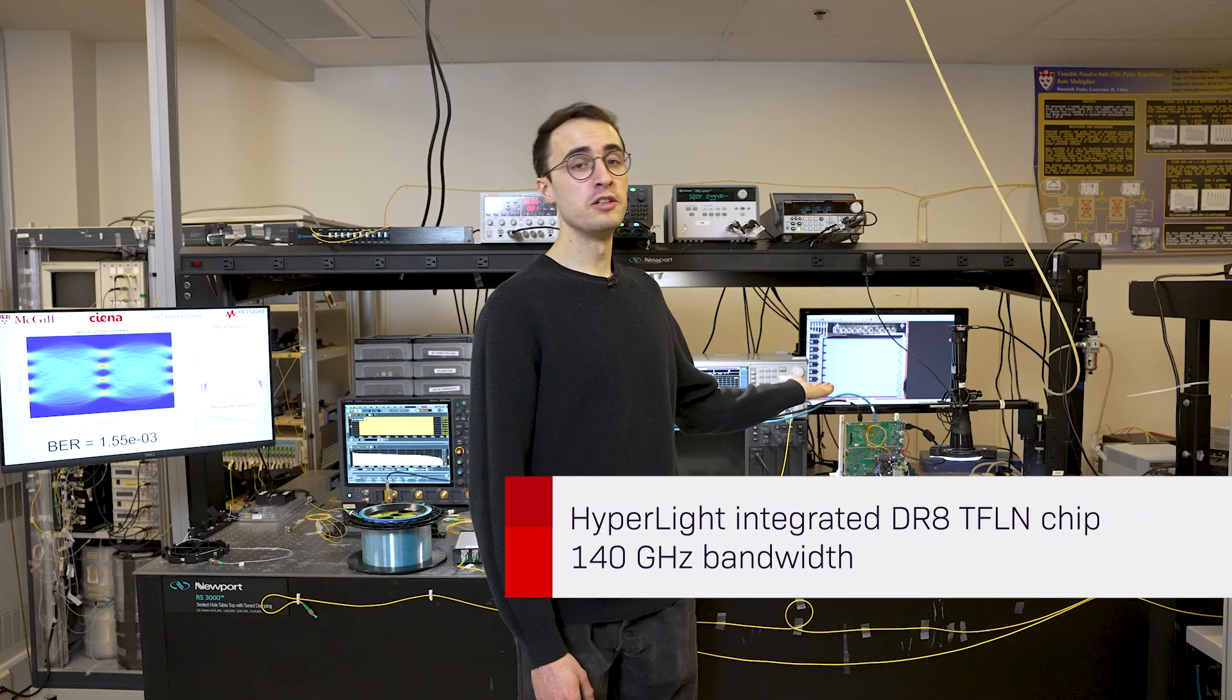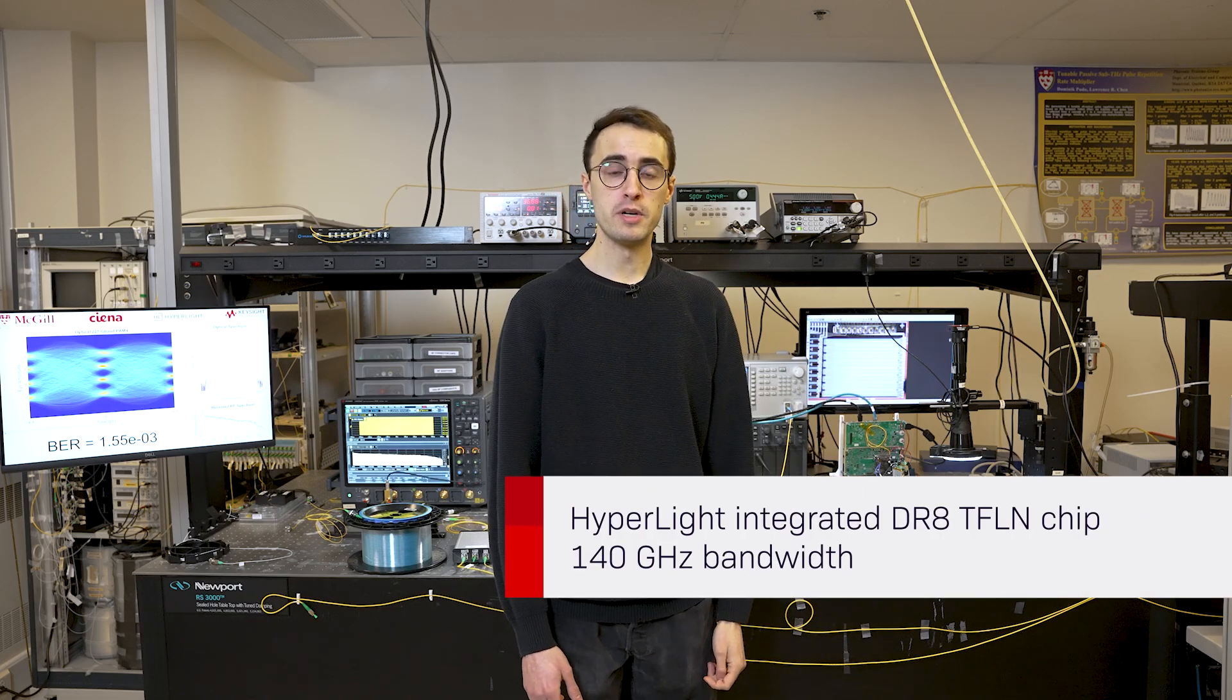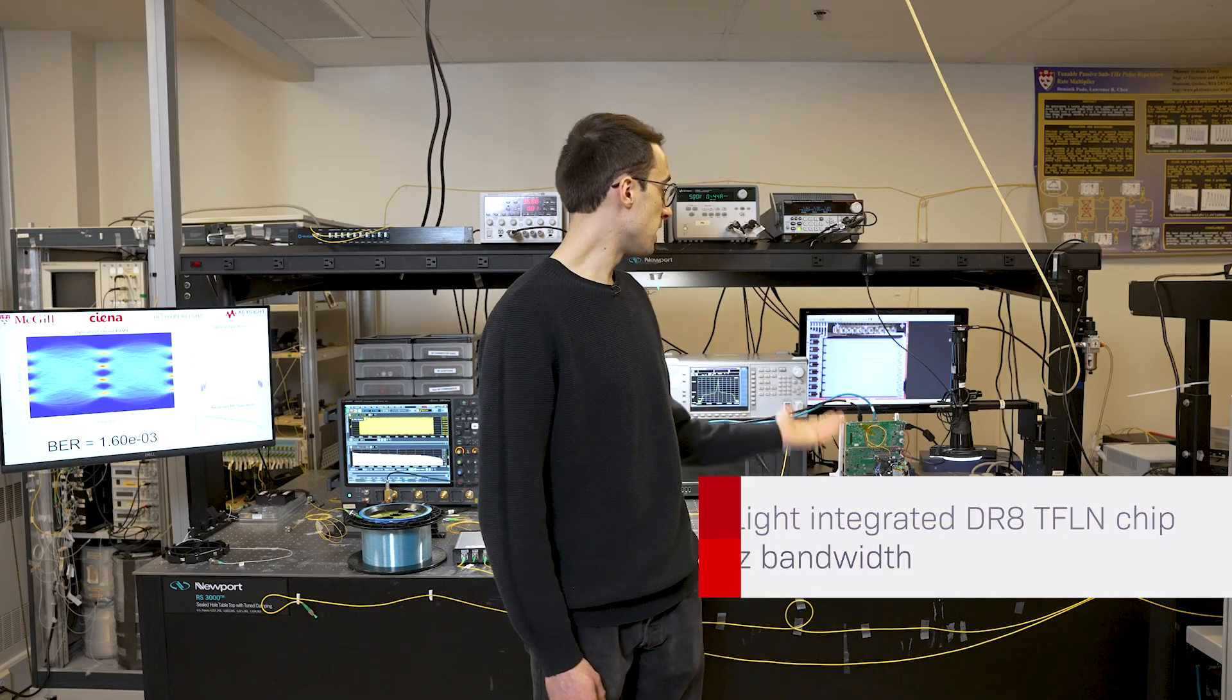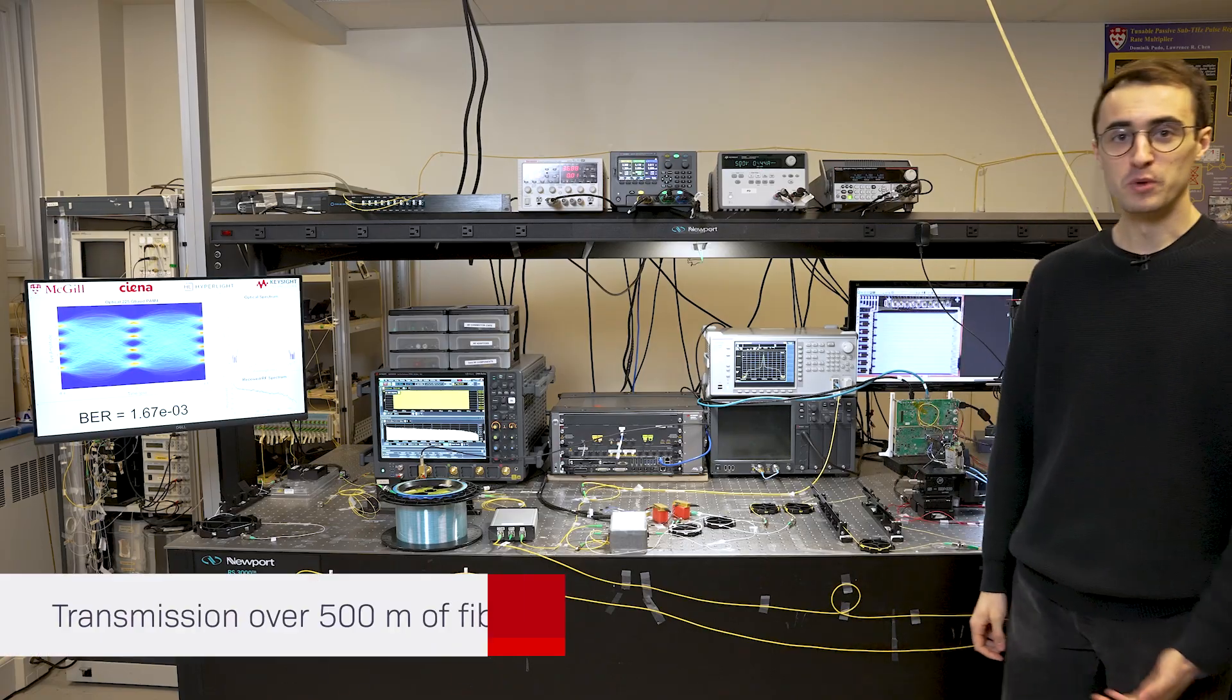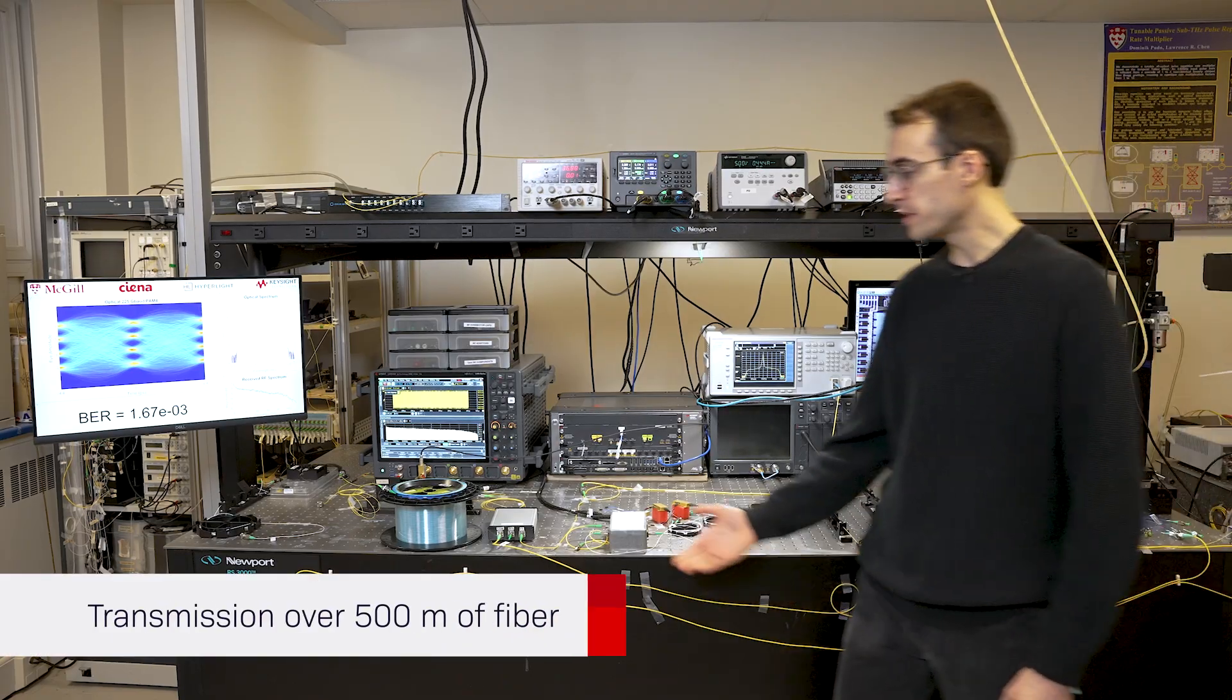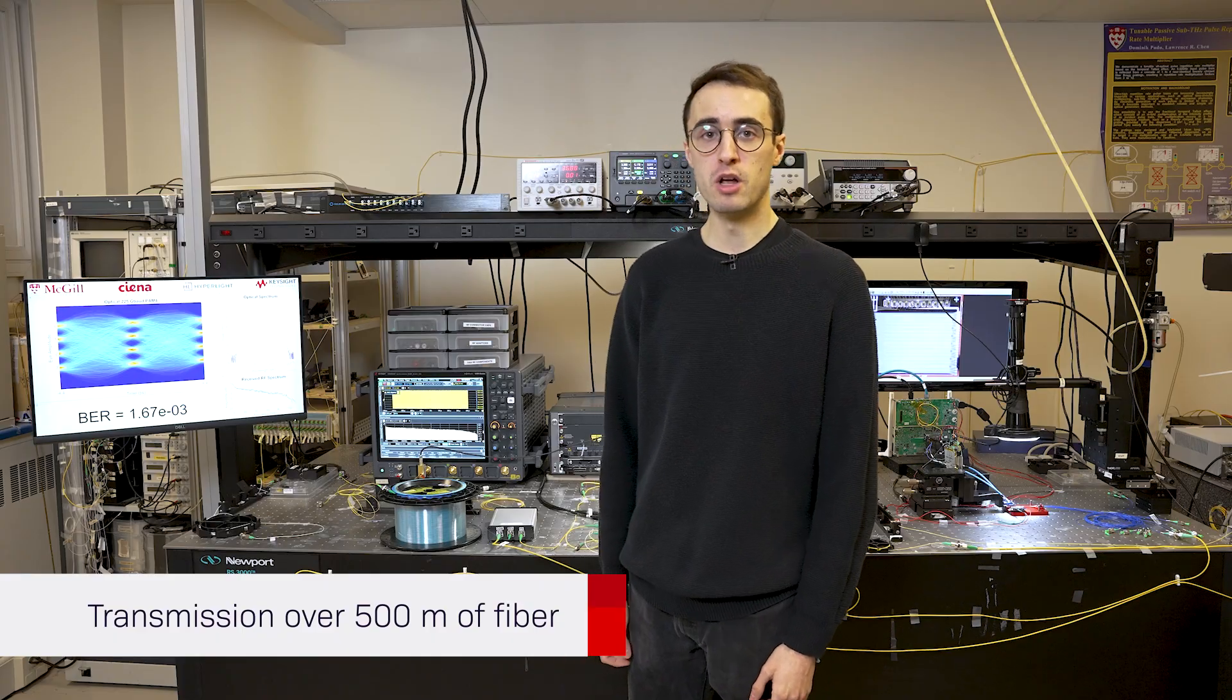The DR8 photonic integrated circuit shown here is provided by HyperLight and is on the thin-film lithium niobate material platform. It features eight parallel modulators with over 140 gigahertz of electro-optic bandwidth. We select the channel of interest and then propagate through 500 meters of optical fiber. We also demonstrate it up to two kilometers.